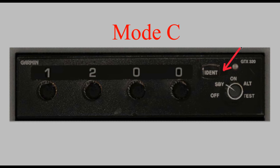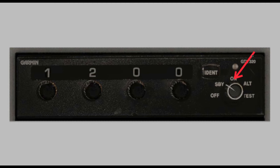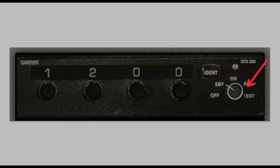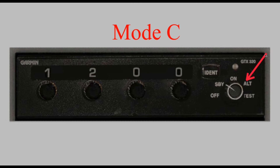Let's take a look at a mode C transponder. This is a Garmin mode C transponder. It has off, standby, on, and altitude. In standby, you're just getting it warmed up — it is not going to respond to any interrogation. When you put it in the on position, it will work as a mode A only transponder; in other words, it won't send any altitude information. When you switch over to altitude, the transponder will send altitude information, and possibly some other information, to the radar system for the air traffic controller to see.